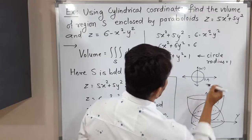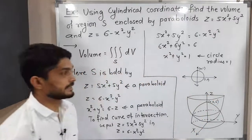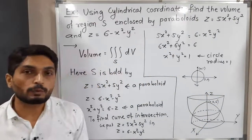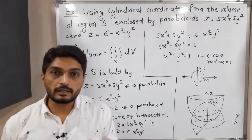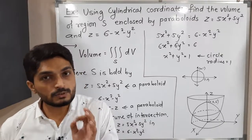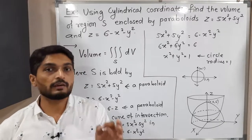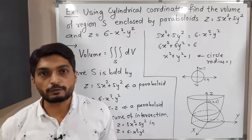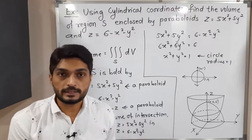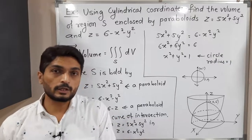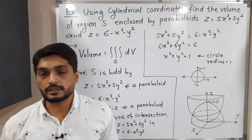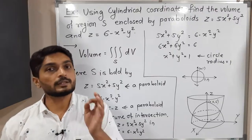When we take the projection of that intersection circle onto the xy-plane, we get a circle with center (0, 0) and radius 1, passing through (1, 0) and (0, 1). To convert the problem to cylindrical coordinates — since we have a paraboloid — we set x = r cosθ, y = r sinθ, and z = z.